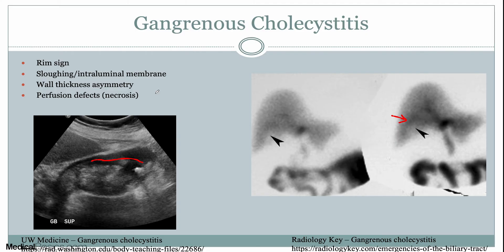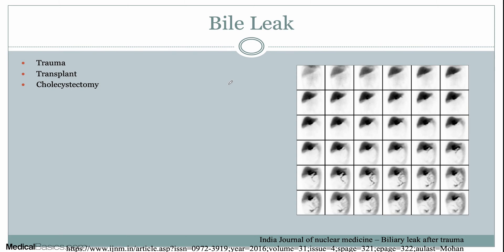Gangrenous cholecystitis is due to necrosis of the gallbladder wall. The next case is a bile leak. In this situation — I believe this was a trauma patient — you have activity outside of the biliary system and bowel. There's normal liver uptake and biliary uptake, but then a linear focus going to diffuse uptake along the left lateral abdominal wall in the peritoneum. Bowel uptake and biliary uptake are normal, but you should not have uptake along the peritoneum. This is bile leak. You may want to order this after trauma, after surgery such as a transplant, or after cholecystectomy if the patient isn't improving.